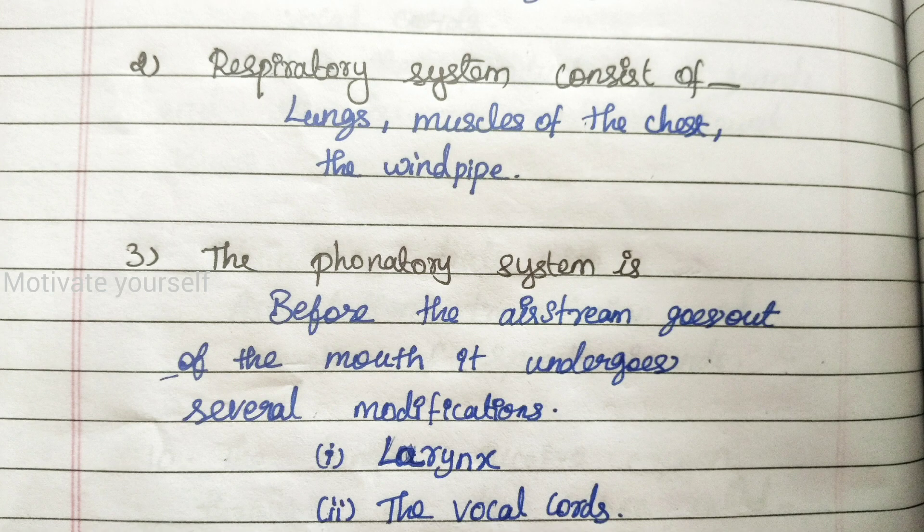Question 2: Respiratory system consists of — Answer: Lungs, muscles of the chest, and the windpipe.